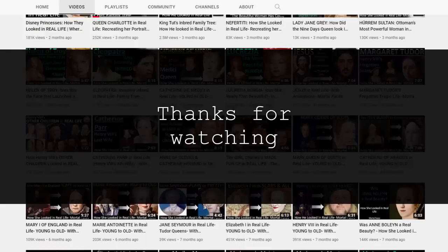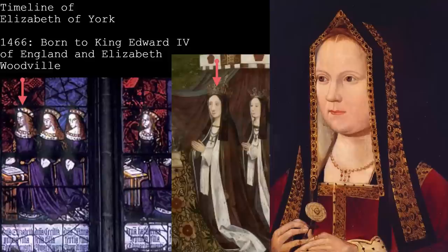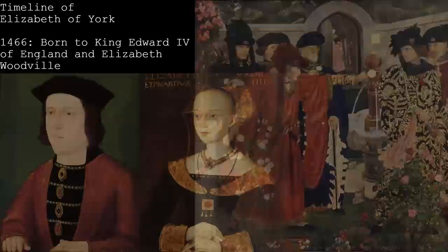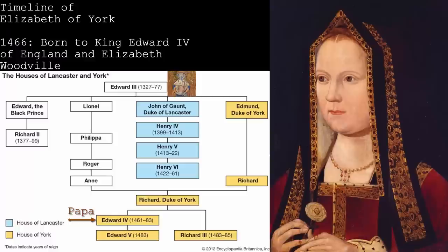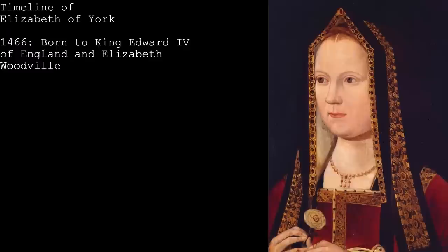Elizabeth of York was born in 1466 into the Palace of Westminster as the eldest child to King Edward IV of England and his wife Elizabeth Woodville. This was during the time of the War of the Roses. Her father, a Yorkist, had a direct line to Edward III and a claim to the English throne. The Lancasters, his cousins, were ruling at the time, with King Henry the Sixth on the throne — so Edward deposed him and became the new Yorkist King Edward the Fourth. Elizabeth was then born.